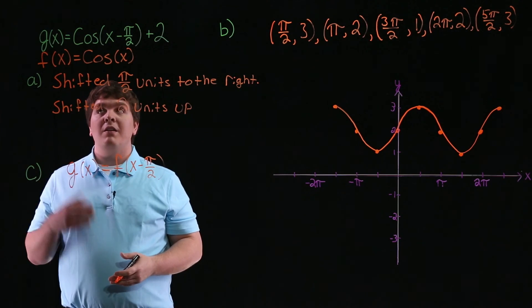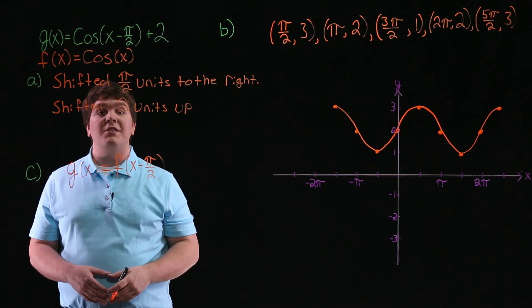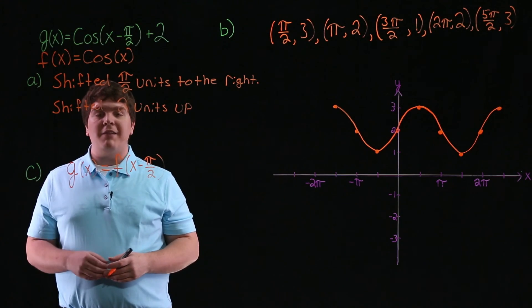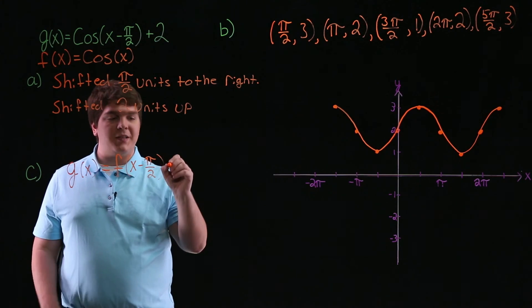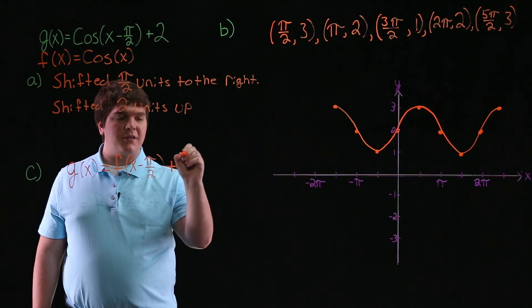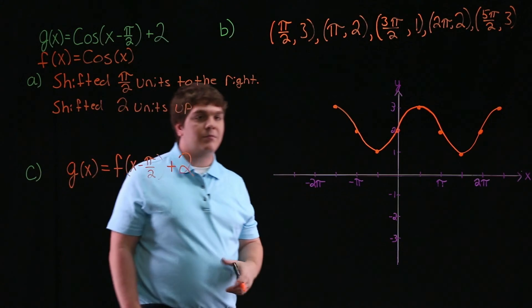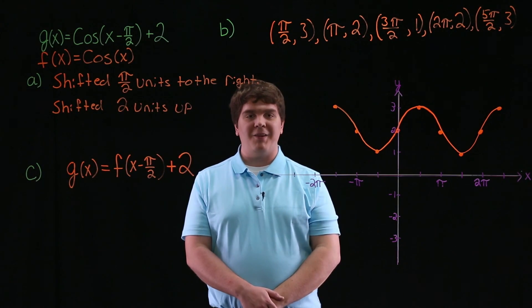And also, since g of x is f of x shifted 2 units up, we'll have that g of x is equal to f of x minus pi over 2 plus 2. Thank you.